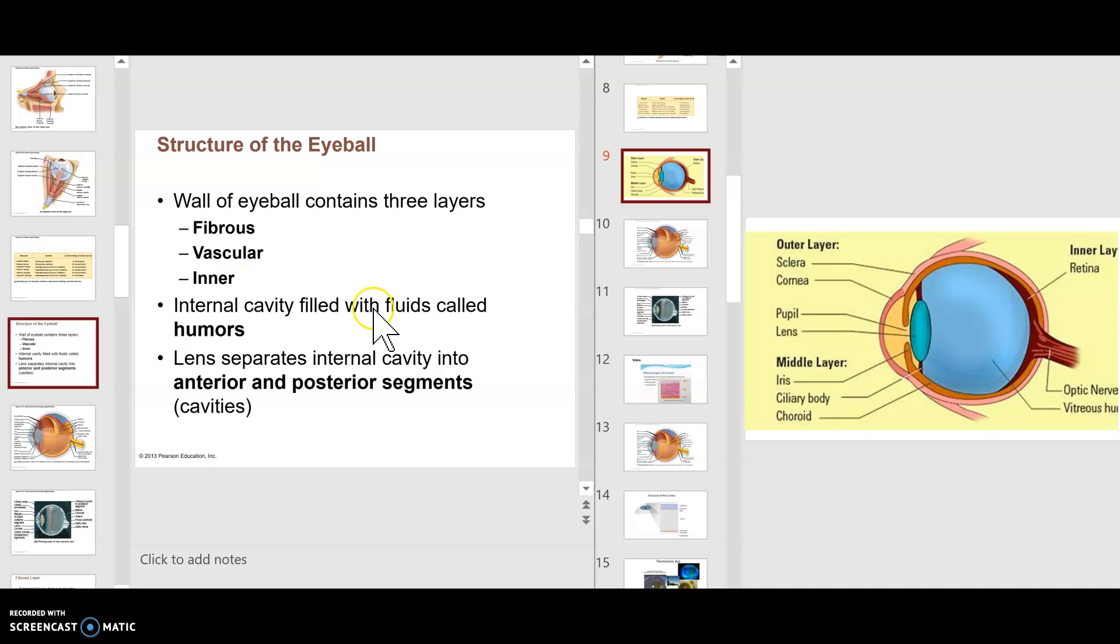You also have two fluid-filled cavities in the eye that help maintain shape. They're called the humors. We have the aqueous humor, which is a more watery fluid, and a vitreous humor, which is more of a jelly-like fluid.